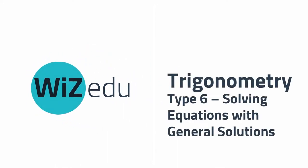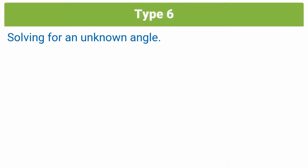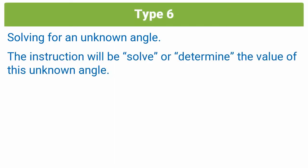Hi guys, it's Ashraf from WizEdu, and today we're going to be going through type 6 trick questions, which are solving equations. We're going to be specifically focusing on solving equations with general solutions, so this would be applicable if you're in grade 11 or 12. In a type 6 question, you'll be asked to solve for the value of an unknown angle, and typically the instruction you'll be given is to solve or determine the value of this unknown angle.